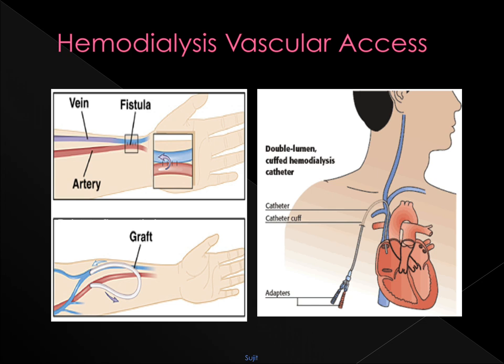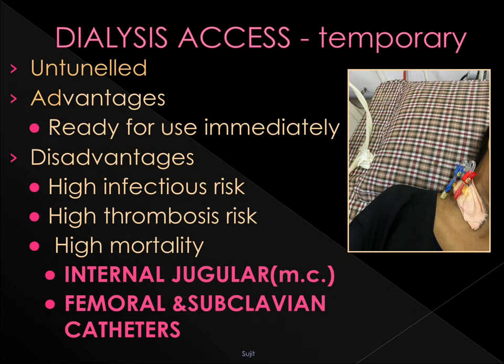Vascular access is the site where we take blood from the patient for dialysis. A temporary catheter is commonly used in emergency situations or when a patient is started on hemodialysis. The advantage is that it can be used immediately. The problem with a temporary catheter is high infection risk, high thrombosis risk — particularly when inserted in the subclavian vein — and high mortality. The sites used are internal jugular, followed by femoral and subclavian vein.